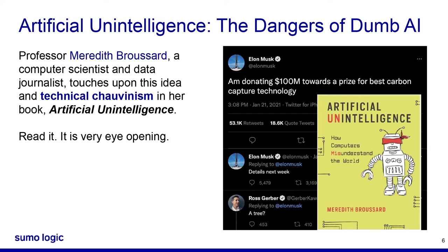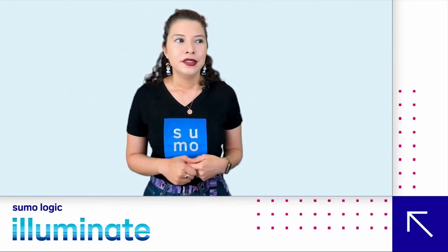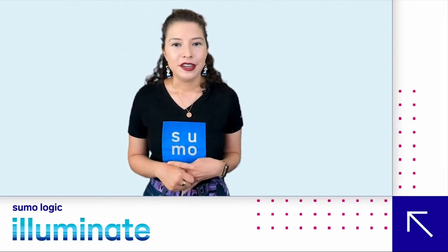Fortunately, there is a counterculture effort to disrupt problematic AI authority over people's autonomy. Here we see a good example of techno chauvinism — Elon Musk wanting to donate $100 million toward a carbon capture technology, and someone responding cheekily: a tree. You don't really need advanced technology for carbon capture — we've always had it in our ecosystem.